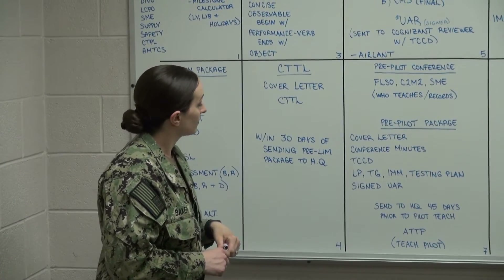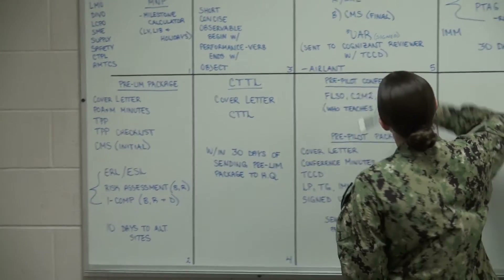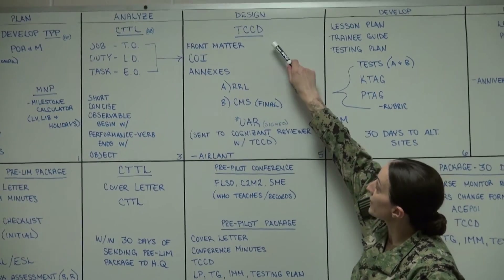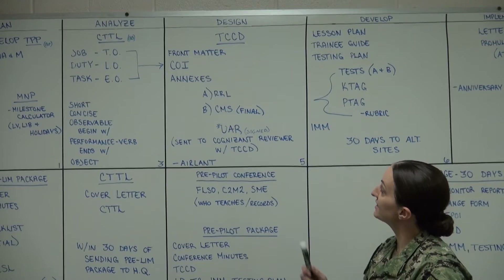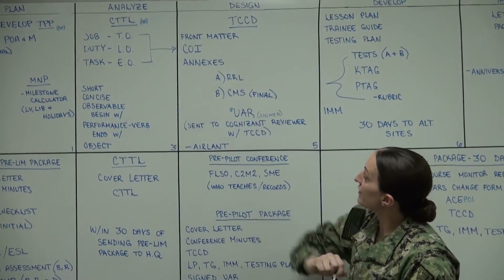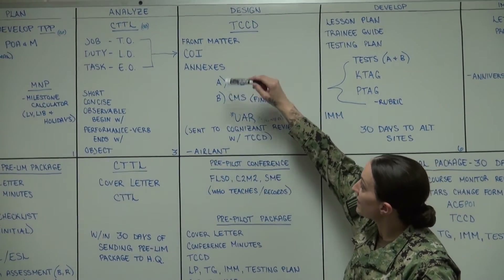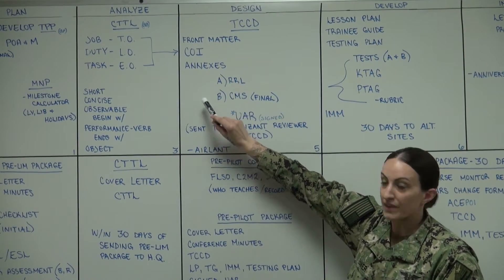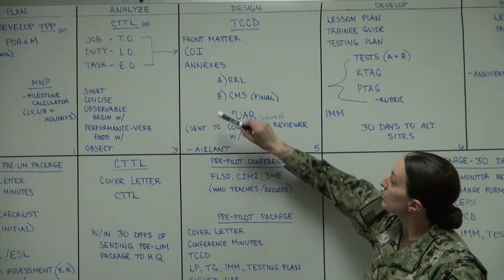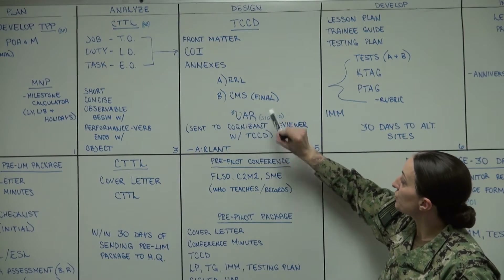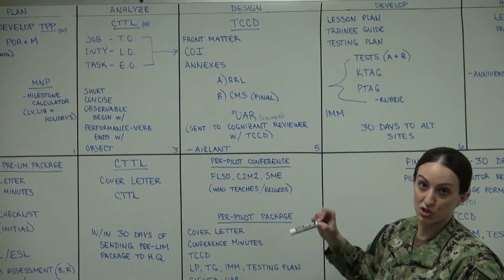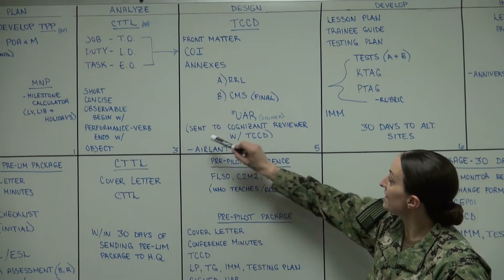We can go ahead and move on to the Design phase. In the Design phase we're going to have our Training Course Control Document (TCCD). This consists of our front matter, curriculum outline of instructions, our annexes — Annexes A and B — A being our resource requirement list, B being our course master schedule (final), along with a UAR (User Activity Review) sent to our cognizant reviewer along with the TCCD.